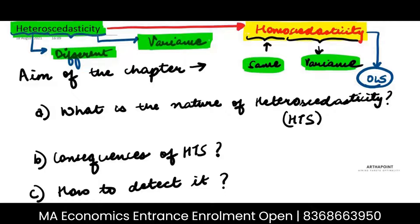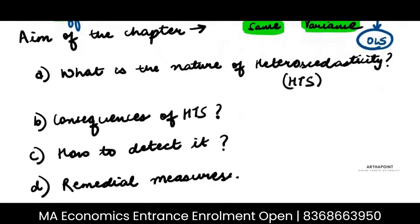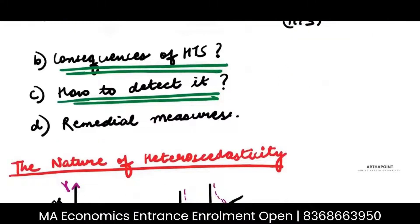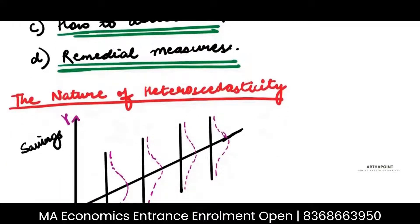But one of the violations of this assumption is heteroscedasticity. The aim of this chapter is to understand the nature of heteroscedasticity, the consequences of heteroscedasticity, how to detect heteroscedasticity, and to find the remedial measures of heteroscedasticity.